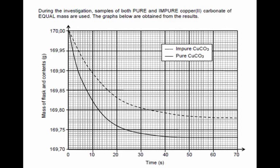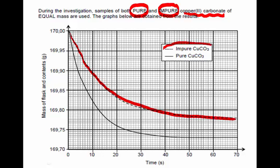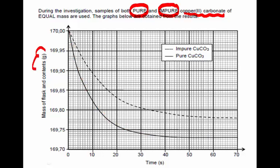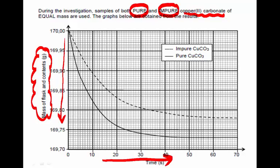During the investigation, we use both pure and impure copper carbonate. Here's the graph: the dotted line is for the impure copper carbonate, and the solid line is for the pure copper carbonate. We can see that the mass of the flask and its contents is decreasing with time, which is what we discussed before, and the rate at which this happens tells us about the reaction rate.